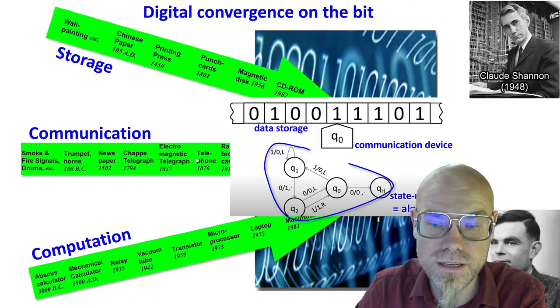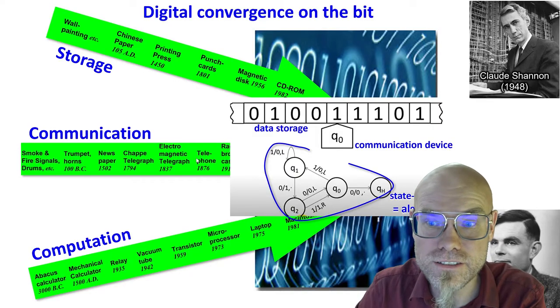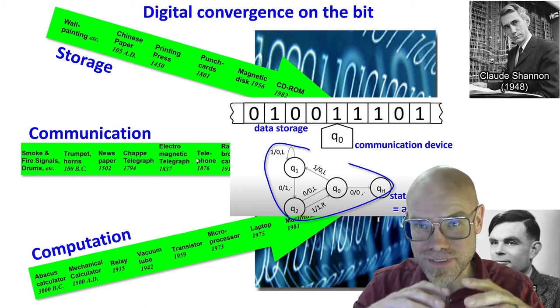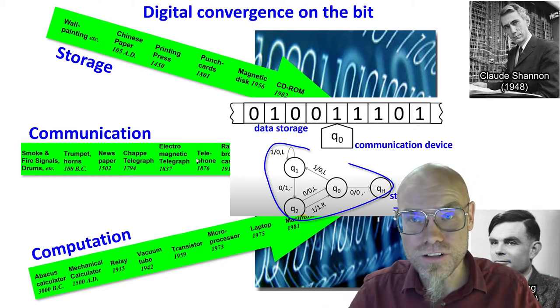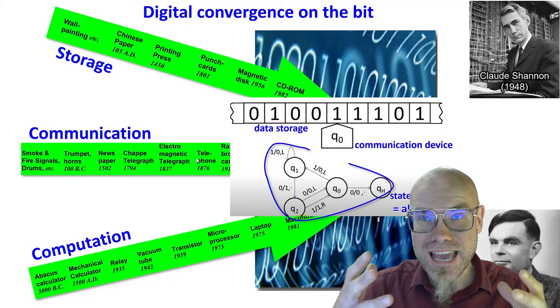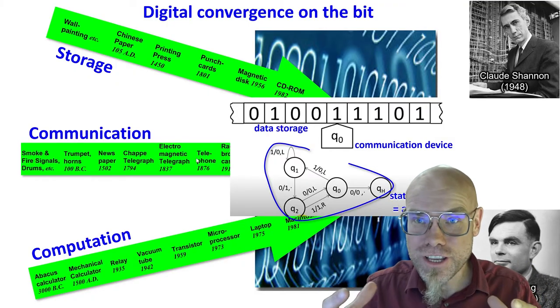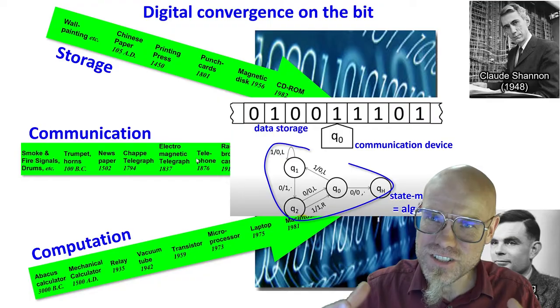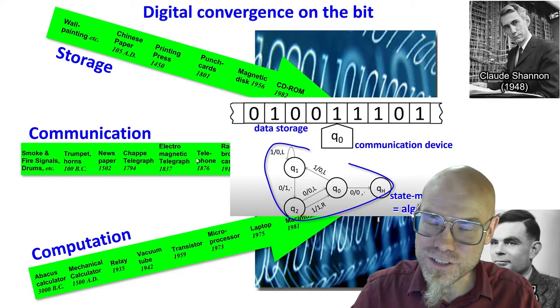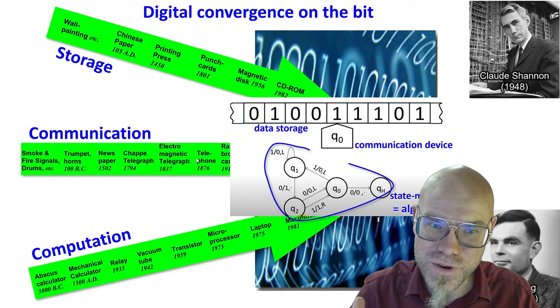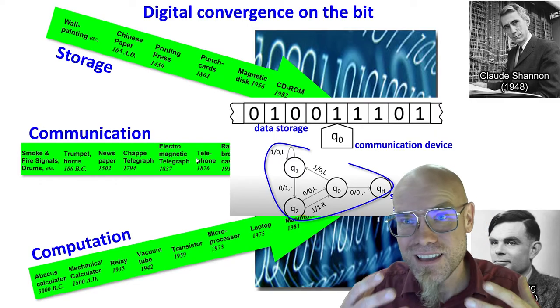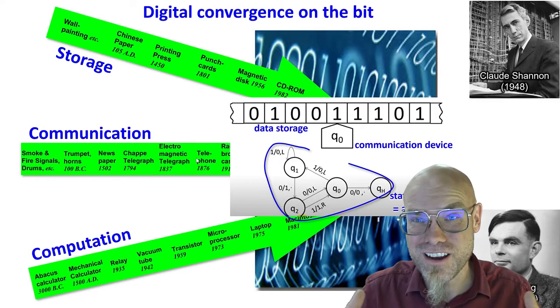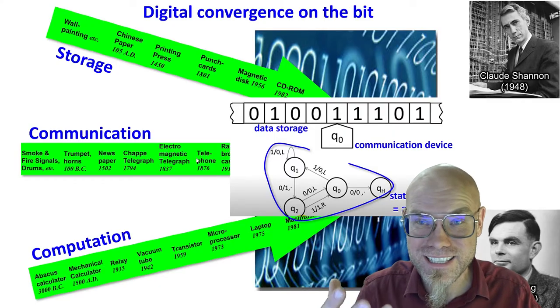So then on the scale of society also, we compute as society. And these ongoing innovations on this large scale change how society computes. It's kind of like the computing hardware is changing. When we had wall paintings and smoke signals and Abacus calculator, the computing hardware is how we transformed on a societal scale.